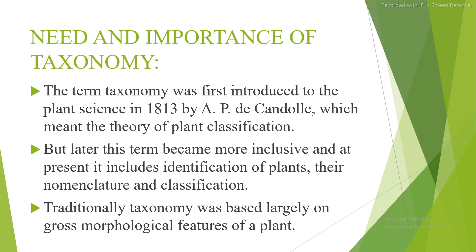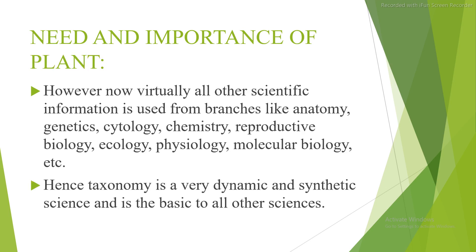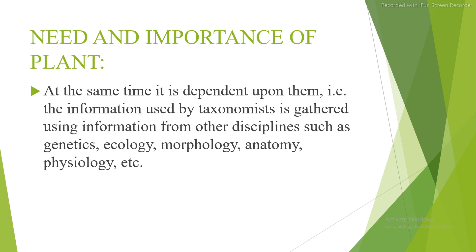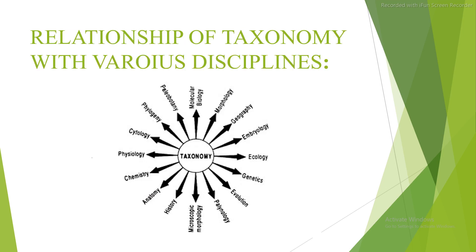Traditionally, taxonomy was based largely on the gross morphological features of a plant. However, now virtually all other scientific information is used, from branches like anatomy, genetics, cytology, chemistry, reproductive biology, ecology, molecular biology, and more. Hence, taxonomy is a very dynamic and synthetic science, basic to all other sciences, while also being dependent upon them. The information used by taxonomists is gathered from other disciplines such as genetics, ecology, morphology, anatomy, and physiology.